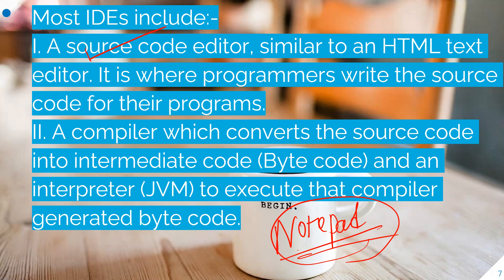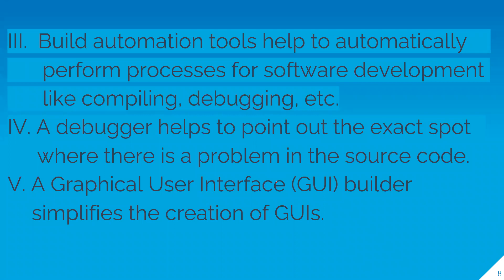उसके बाद IDE हमें compiler provide करता है। Compiler को हम use करते हैं to convert the source code into intermediate code, यानी byte code। Java में source code को directly machine code में नहीं बल्कि byte code में convert किया जाता है। उसके बाद JVM provide करता है जो interpreter की तरह काम करता है — byte code को machine code में convert करके execute करता है और result provide करता है।